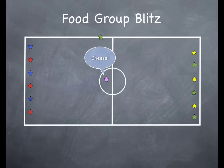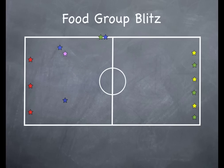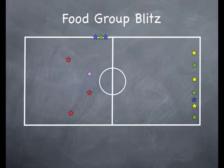The chef continues on and calls out cheese, so then the dairy products go across. It looks like a couple of players got tagged. And then finally, chicken — which is the meat and alternatives group — goes across. It looks like no one got tagged, and then they go back the other way.